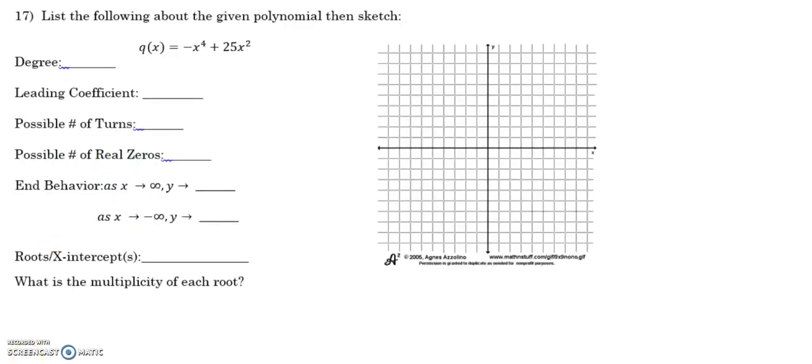All right, we're going to try to get through this one pretty quickly. So degree is going to be 4. Leading coefficient, negative 1. Possible number of turns is 1 less than the degree. So 3. Possible number of real zeros are 4. They could all be real. End behavior, as x goes to infinity, let's see, we've got down, down. So as x goes to infinity, y goes to negative infinity. And as x goes to negative infinity, y is also going to negative infinity. All right, so this would be going out to infinity. This tail is going down. Out to negative infinity, this tail is also going down.